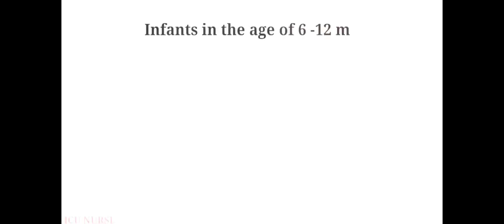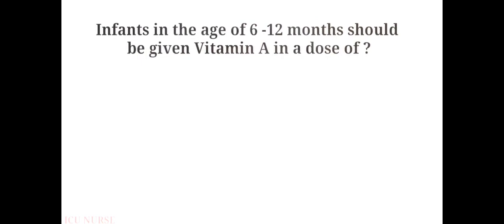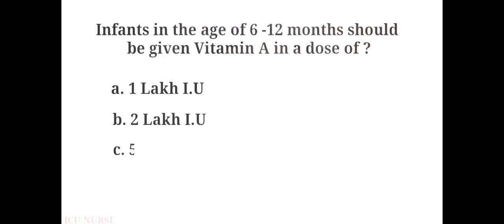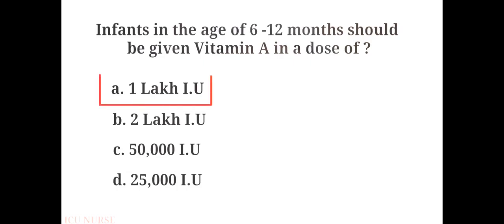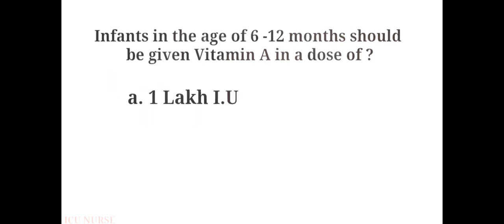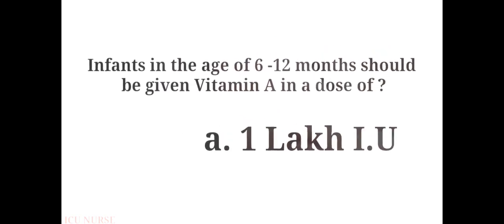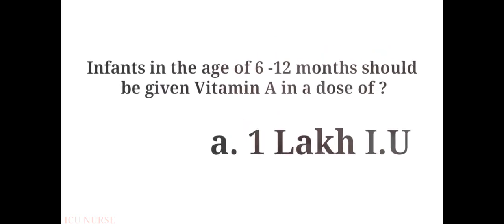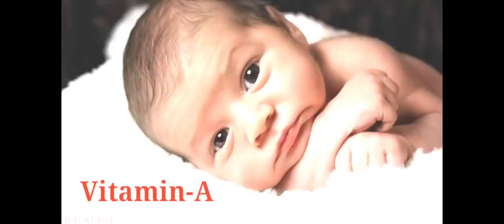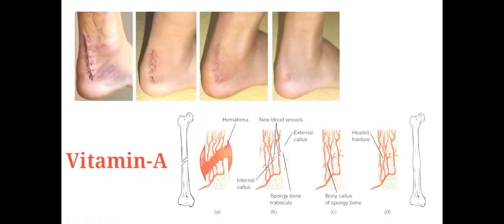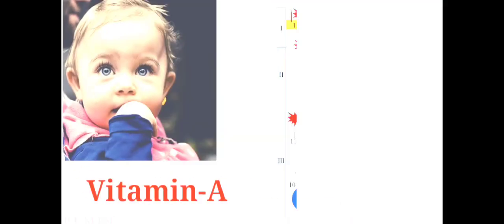Infants in the age of 6 to 12 months should be given vitamin A in a dose of: A. 1 lakh international units, B. 2 lakh international units, C. 50,000 international units, D. 25,000 international units. The answer is A. 1 lakh international units. Vitamin A promotes normal growth and development, tissue and bone repair, and healthy skin, eyes and immune responses.